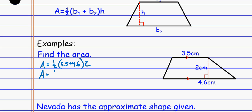You have to follow order of operations, so you start inside the parentheses. Inside the parentheses, 3.5 plus the 4.6 is 8.1. Now I can multiply these three things together on my calculator: 0.5 or one-half times the 8.1 times the two. When I do that, I get 8.1, and that's square centimeters.